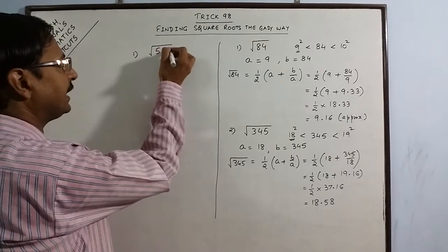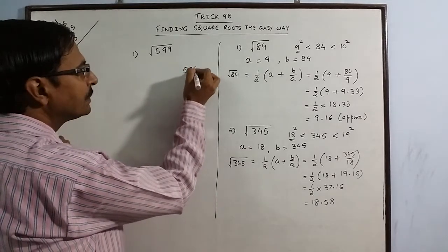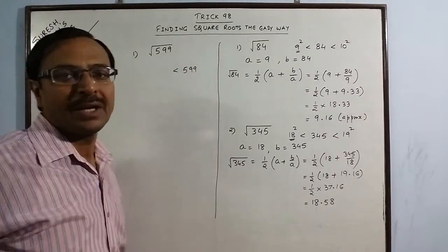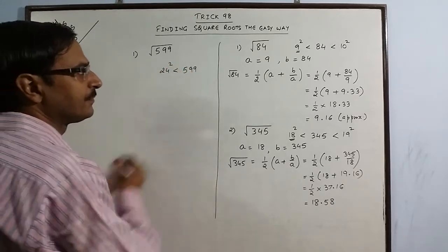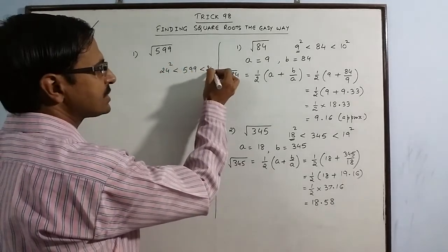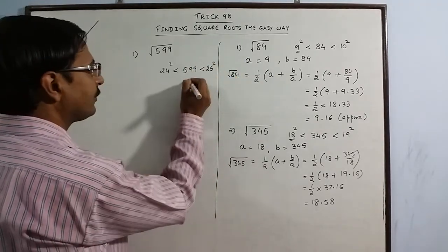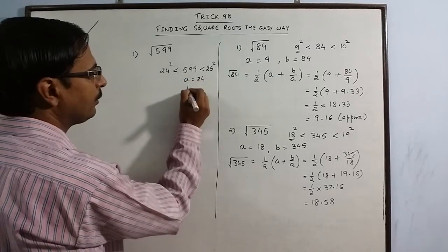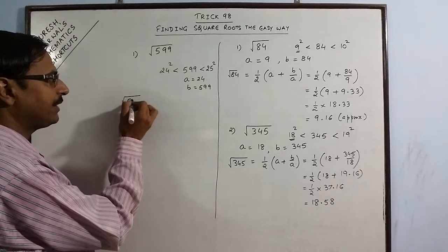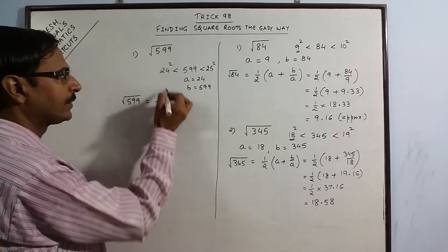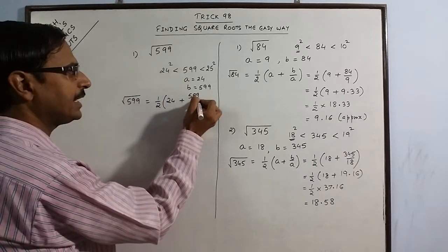Say we have 599. Now this 599, it lies between, if you are aware of the squares, then 24 squared is 576 and 25 squared is 625. So it lies between 24 and 25 square. So the value of a is 24 and the value of b is the number itself 599. So the square root of 599 will be half of a is 24 plus b is 599 upon 24.